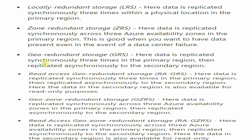Read-Access Geo-Redundant Storage, or RA-GRS, differs from GRS in that the secondary storage is available in read mode even without a primary region failure. So you can access your secondary region data in read mode even while the primary is still operational.